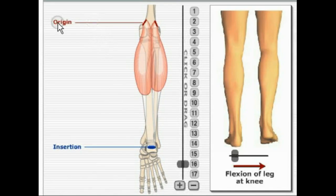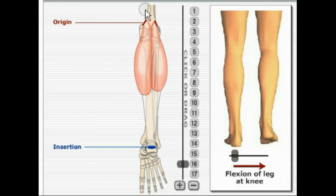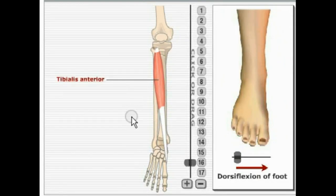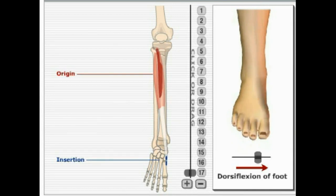We'll move down to the calf muscles of the leg. First, we'll look at gastrocnemius. Its origin is proximal to the lateral and medial condyles of the femur, and it inserts on the calcaneus bone via the Achilles tendon. Its primary action is plantar flexion of the foot, and it also performs flexion of the leg at the knee. Now we'll look at the anterior view of the lower leg — the tibialis anterior. It originates on the anterior lateral surface of the tibia and inserts at the first metatarsal. Its primary action is dorsiflexion of the foot, which is the opposite of the gastrocnemius. And that concludes my presentation on the muscles of the lower extremity.